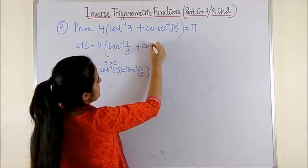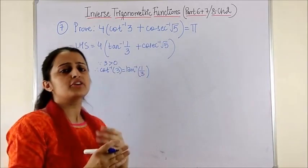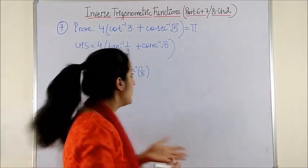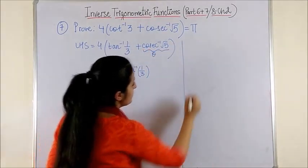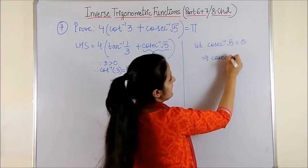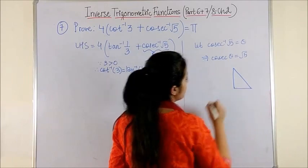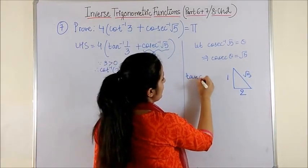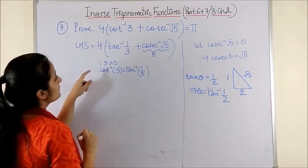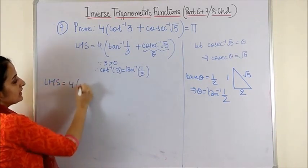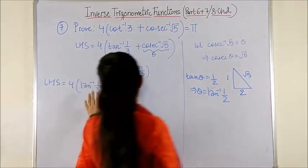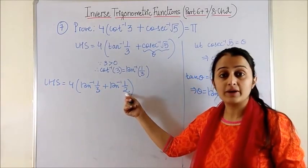Plus cosecant inverse of √5. We would like to create the formula for tan⁻¹x + tan⁻¹y here, so I need to convert cosec⁻¹(√5) in terms of tan. Assuming this as θ: cosec⁻¹(√5) = θ means cosec θ = √5. Making use of the trigonometric triangle, tan θ = 1/2, so θ = tan⁻¹(1/2). Substituting this, the LHS becomes tan⁻¹(1/3) + tan⁻¹(1/2). We can use the formula since (1/3)×(1/2) = 1/6 < 1.